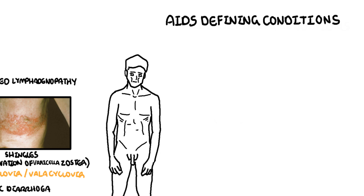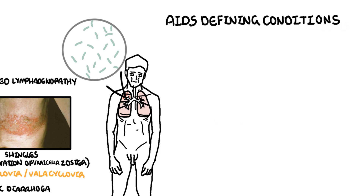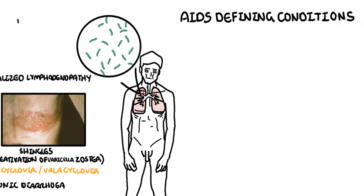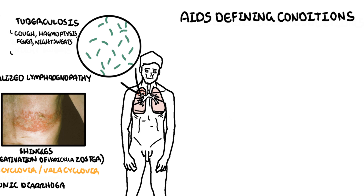AIDS defining conditions include mycobacterium tuberculosis, which typically presents with a cough, hemoptysis, fever, weight loss, or night sweats. Mycobacterium tuberculosis is treated with tuberculosis medications, but we must consider interactions of rifampicin tuberculosis medication with other antiretrovirals used for HIV.